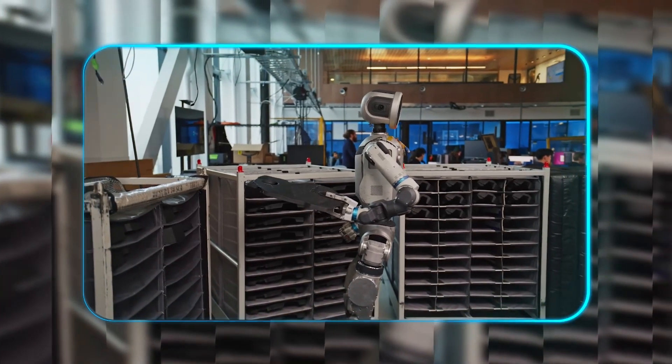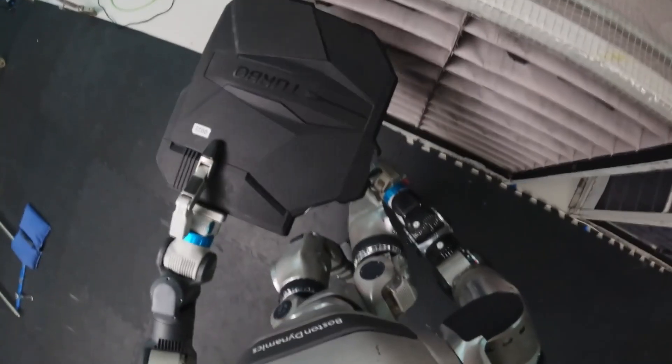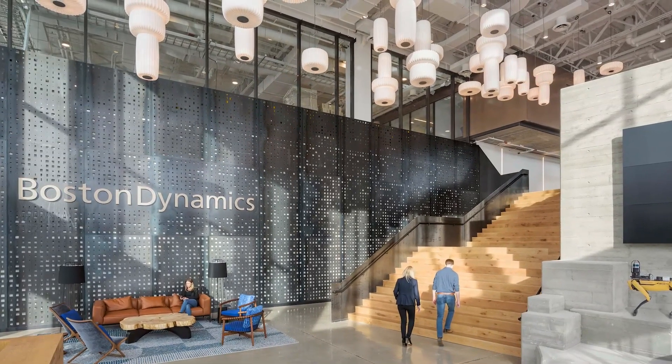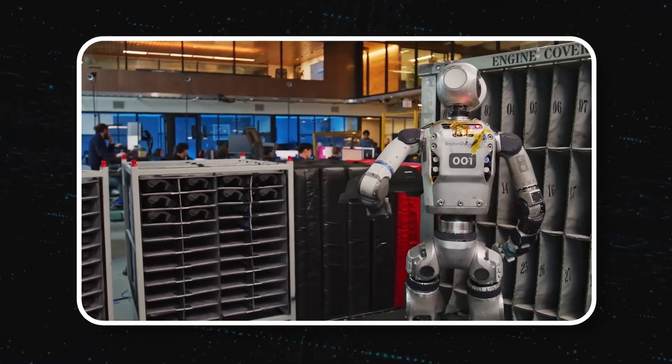Unlike traditional industrial robots stuck doing one repetitive job, humanoids have the flexibility to handle different tasks. Boston Dynamics is focused on making Atlas adaptable, whether it's picking up objects, moving through cluttered spaces, or adjusting on the fly.